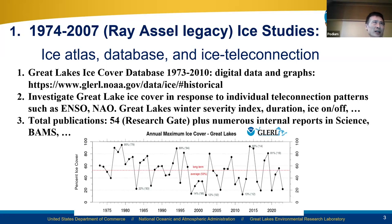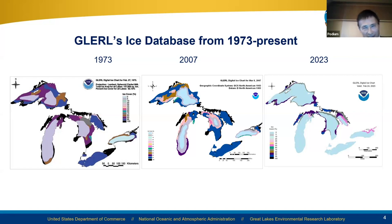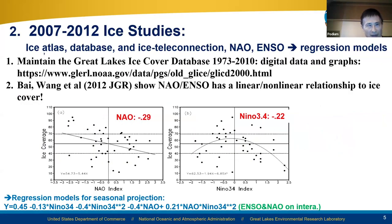This legacy is why we can continue to maintain the data and use it to validate models. As you can see, since 1973 to now, the ice cover has decreased — the data shows about a 5% decline per decade, as Jim pointed out. I'm not going to talk about that too much.